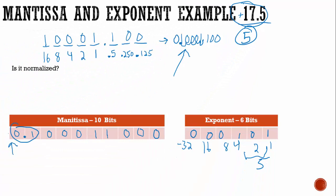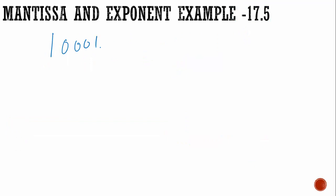Now let's do an example with a negative number. There's a reason I'm using negative 17.5 — it's a trick to show you how you can convert a positive number to negative very easily. The fixed point representation is 10001.1.